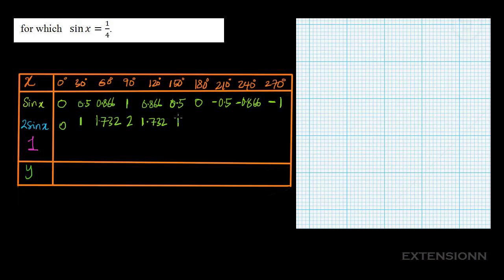Continuing: 2 × 0 = 0; 2 × (−0.5) = −1; 2 × (−0.866) = −1.732; and 2 × (−1) = −2.